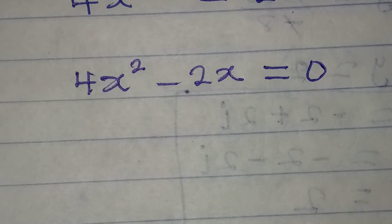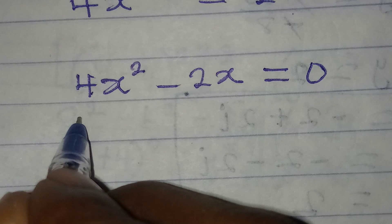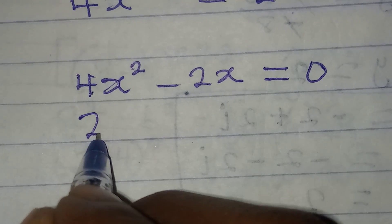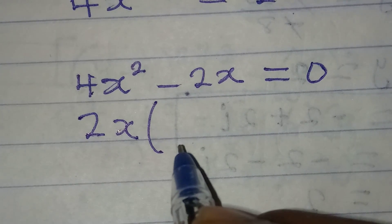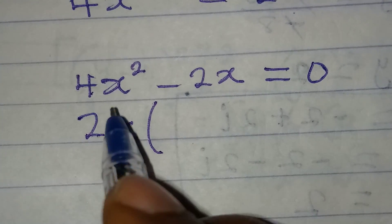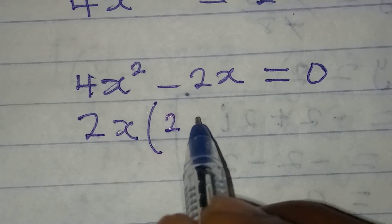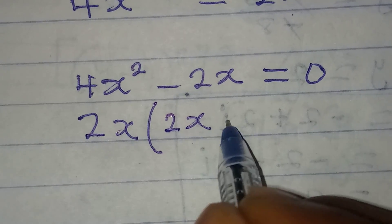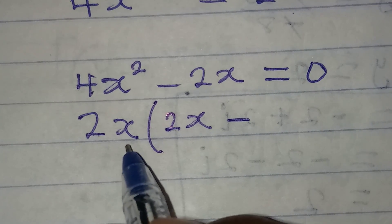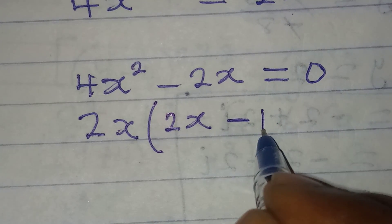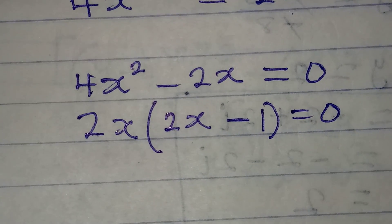To factorize this, 2 is a common factor and x is also a common factor. So from here, 2 will be left and 1x will also be there, minus 2x divided by 2x, which will give 1. So this will now be equal to zero.